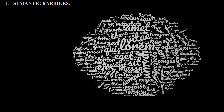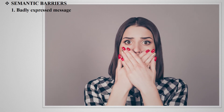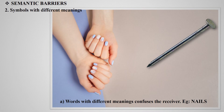The first semantic barrier is a badly expressed message. Sometimes proper meaning may not be sent by the manager to subordinates, due to use of wrong words or sentences, like skipping required words. It may lead to poor language translation or create confusion.